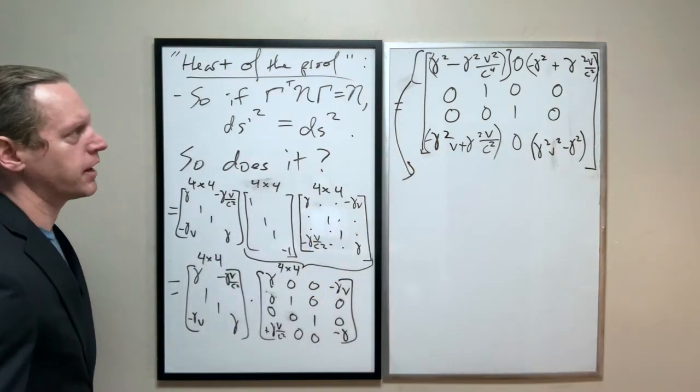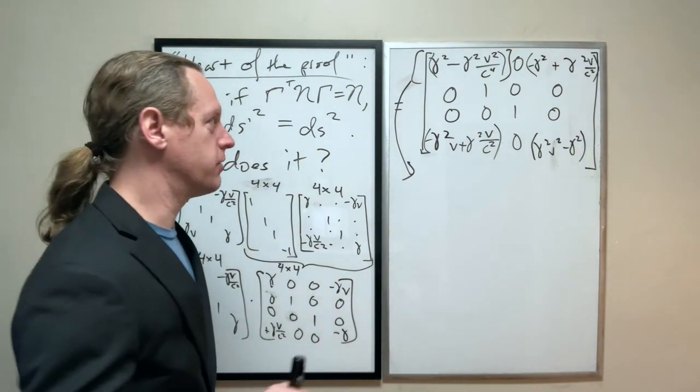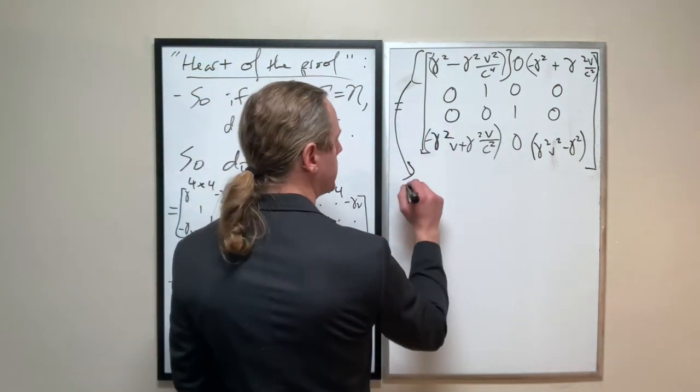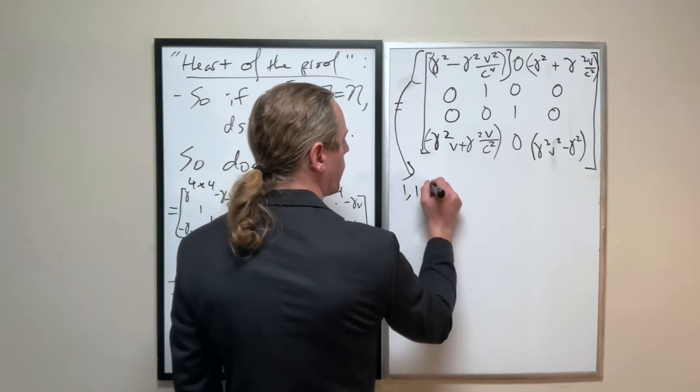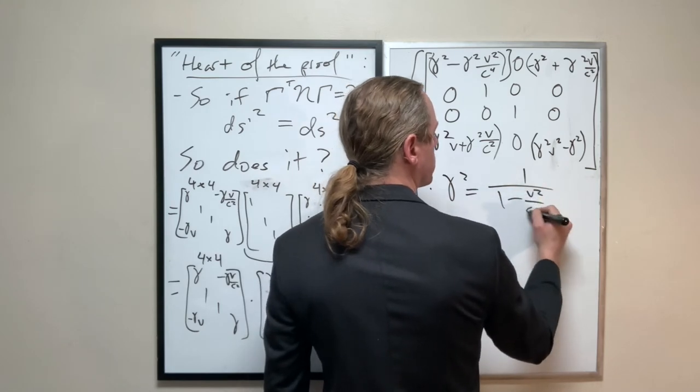I'm worried I might be off by a factor. So what I'm going to do in the end is I'm going to set c equal to one. You'll see why that will make a difference here, but let's take that first element, the one comma one element. Remember gamma squared is just one over one minus v squared over c squared.